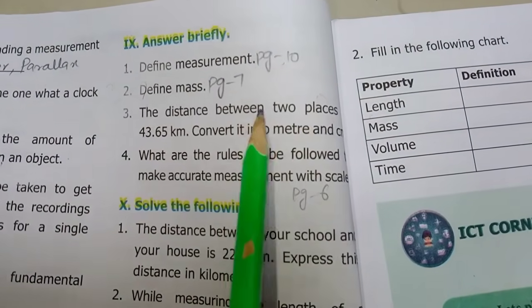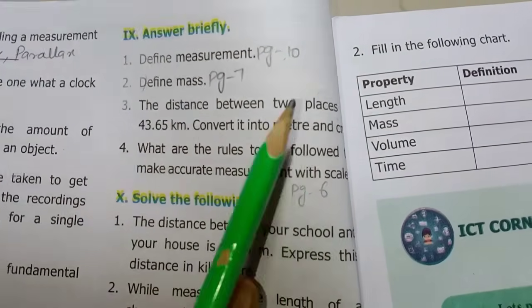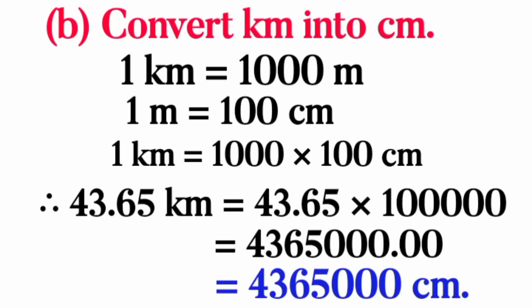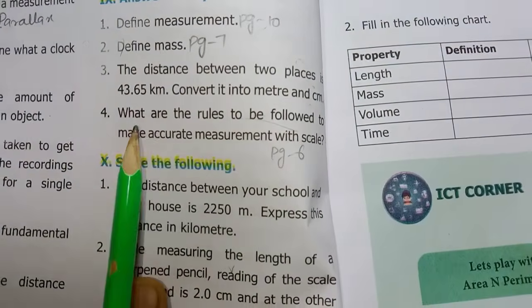Third one — the distance between two places is 43.65 kilometer; convert into meter and centimeter. First, convert kilometer into meter: 1 kilometer equals 1000 meter, therefore 43.65 into 1000 equals 43,650 meters. Then convert kilometer into centimeter: 1 kilometer equals 100,000 centimeter, so 43.65 into 100,000 equals 43,65,000 centimeters.